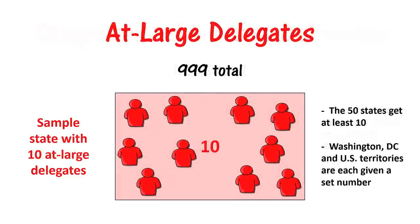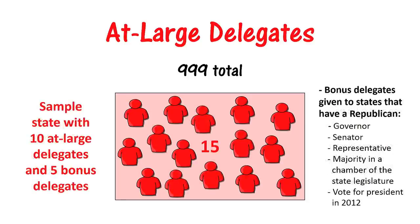Each of the 50 states has at least 10 At-Large Delegates, and they can receive more bonus At-Large Delegates if they have a Republican Governor, Senator, Representative, a majority in a chamber of the state legislature, and if the state voted for the Republican nominee in the previous presidential election.